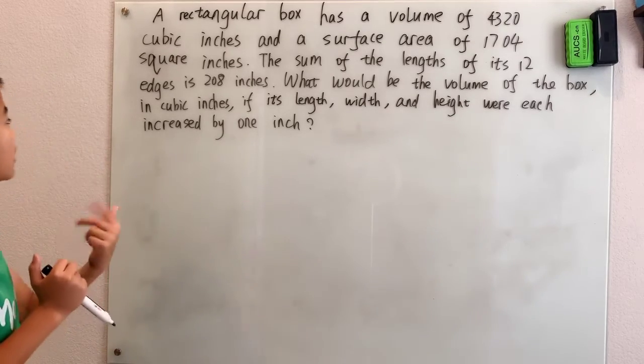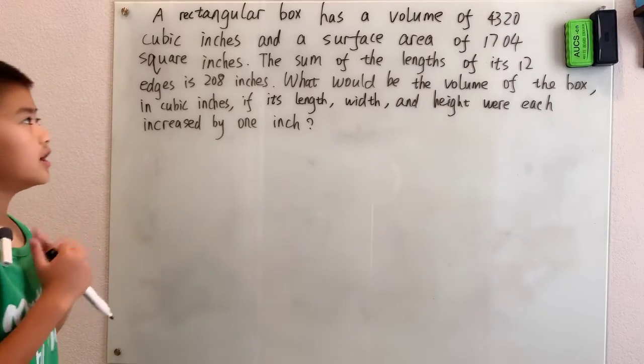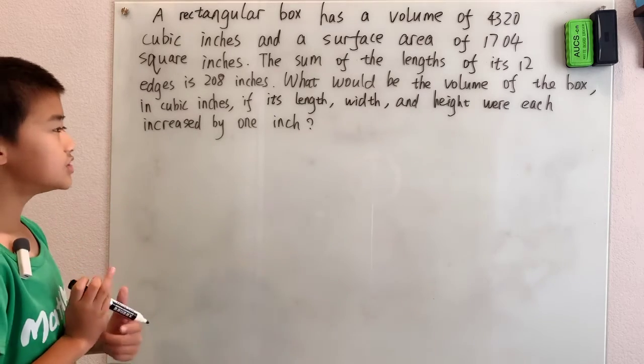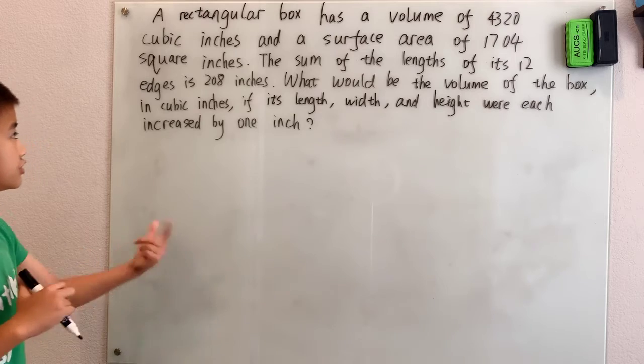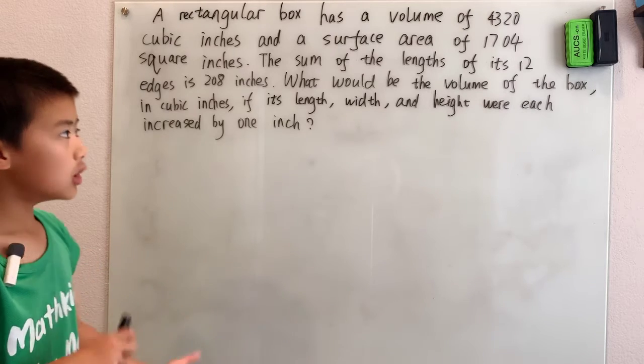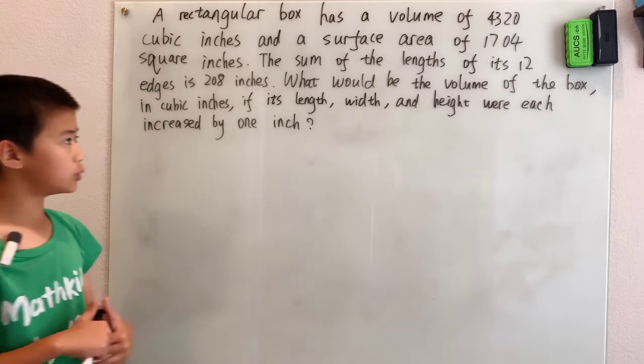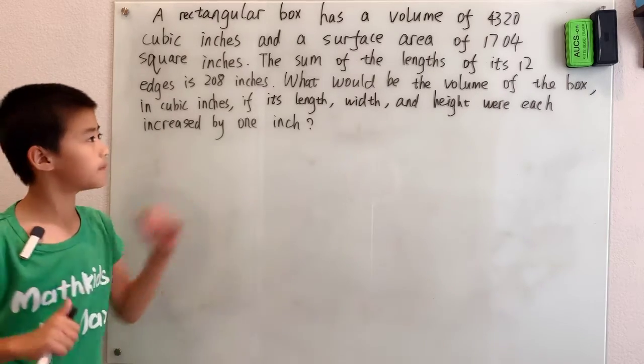A rectangular box has a volume of 4320 cubic inches and a surface area of 1704 square inches. The sum of the length of its 12 edges is 208 inches. What would be the volume of the box in cubic inches if its length, width, and height were each increased by 1 inch?